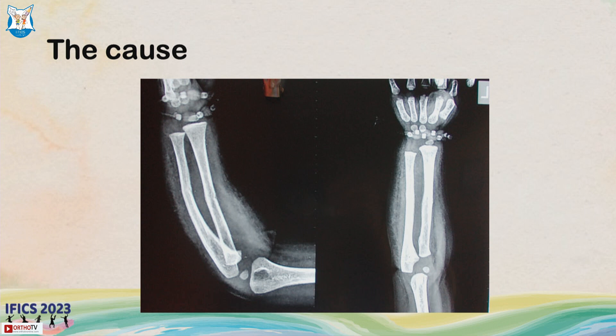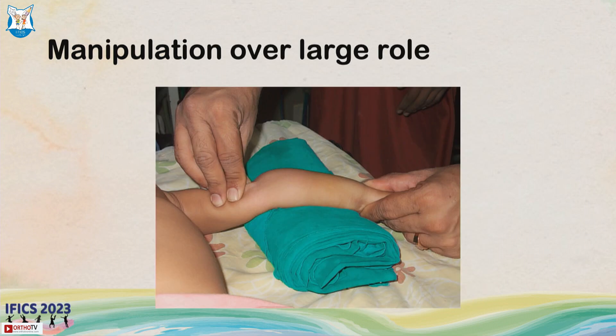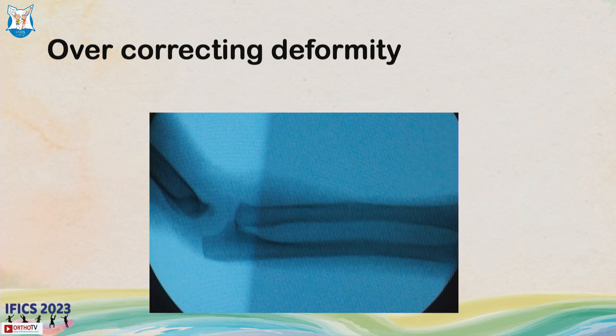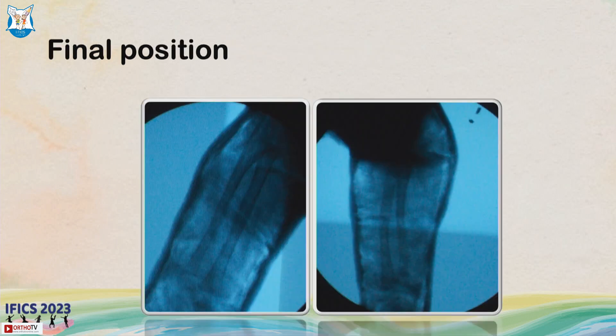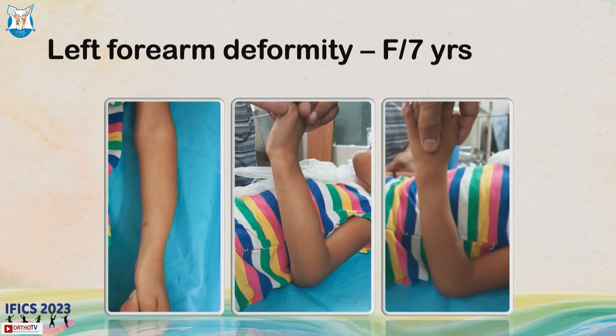Parents were concerned, and this child was manipulated over a sustained period under general anesthesia. I could straighten and over-correct the deformity, which was maintained in a plaster, and the outcome was good.